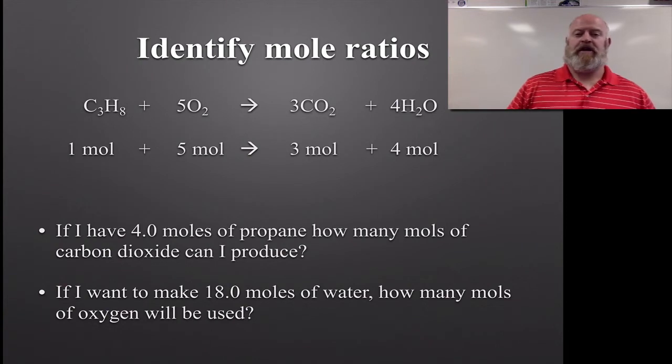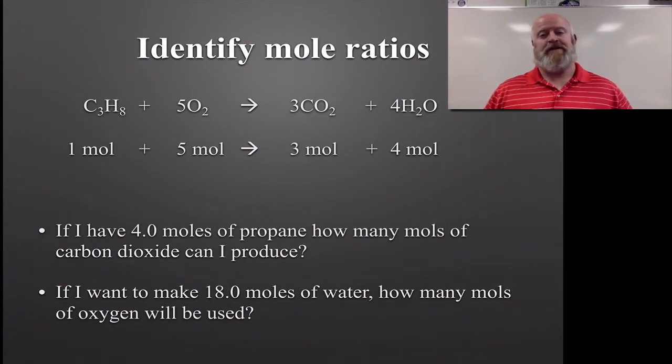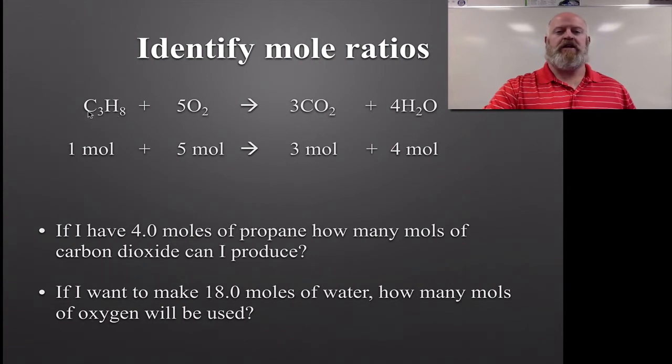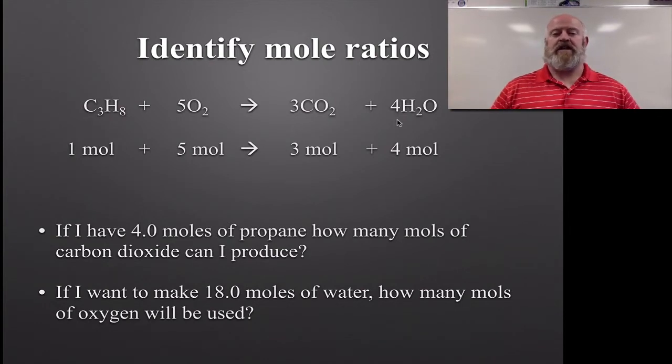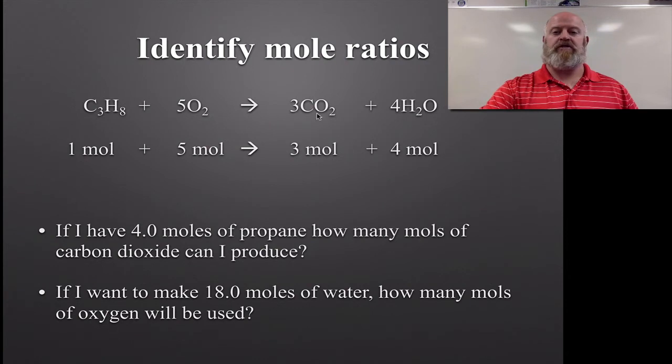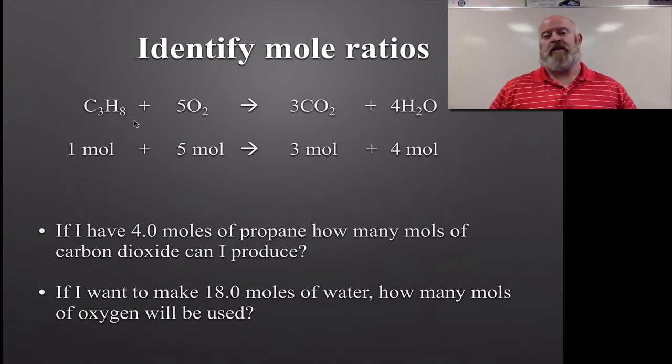We need to look at a balanced chemical equation from the viewpoint of moles. If we take something simple like this, we have propane, C3H8, reacting with oxygen to make carbon dioxide and water, a typical combustion reaction. We have a 1 to 5 to 3 to 4 ratio. Up until this point, we assumed those were atoms or molecules or an amount, and they are. For every 5 O2s we need 3 CO2s, for every 4 waters we need 1 propane and so forth.